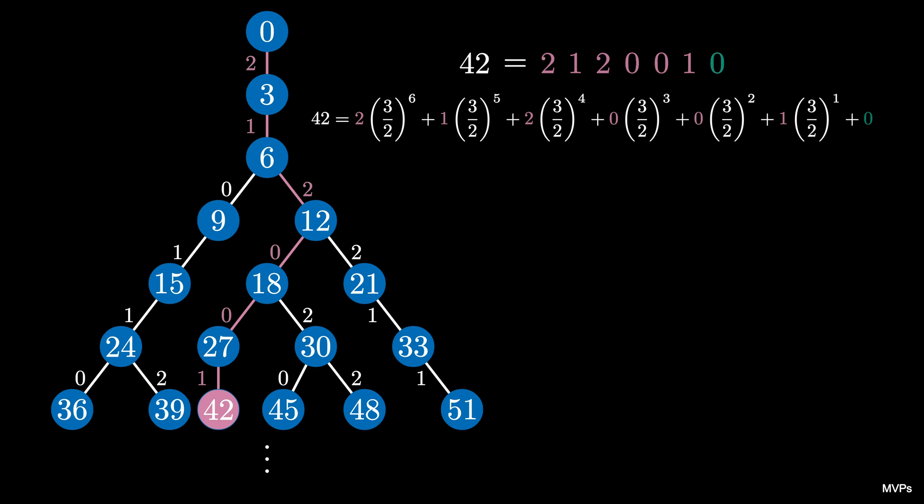That is 42 equals 2 times 3 halves to the 6, plus 1 times 3 halves to the 5th, plus 2 times 3 halves to the 4th, plus 0 times 3 halves squared, plus 1 times 3 halves, plus 0. You can check that this is the case.